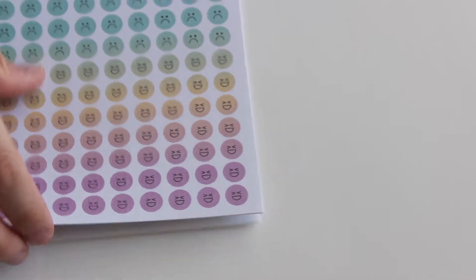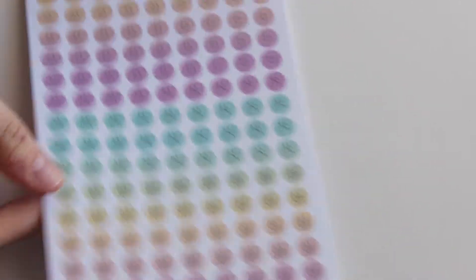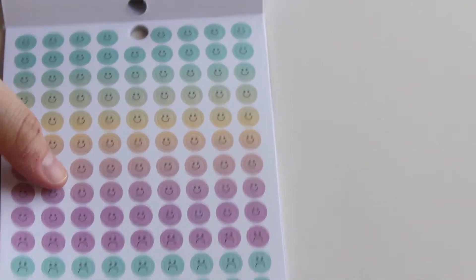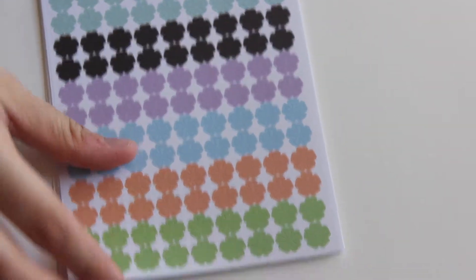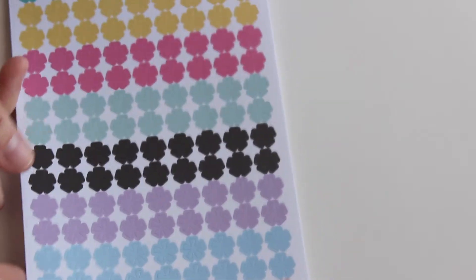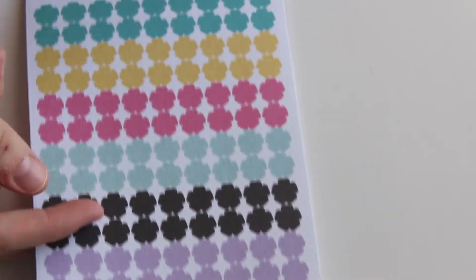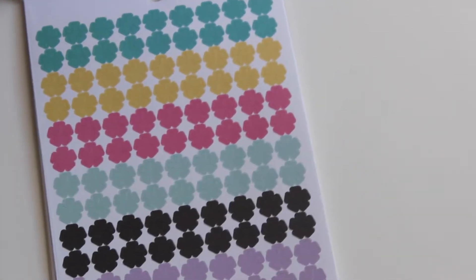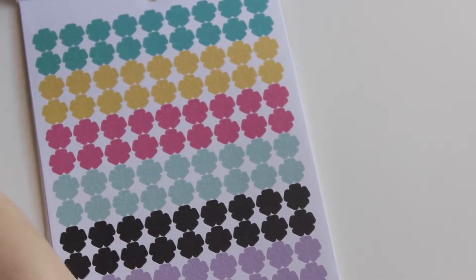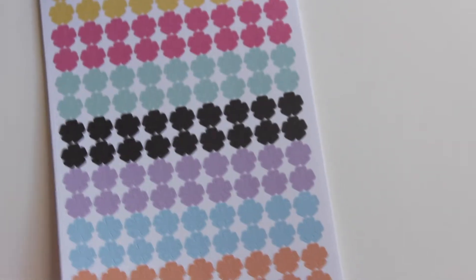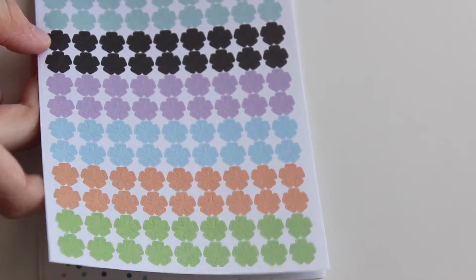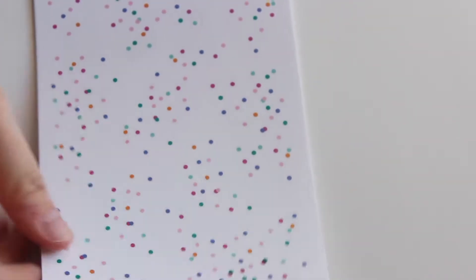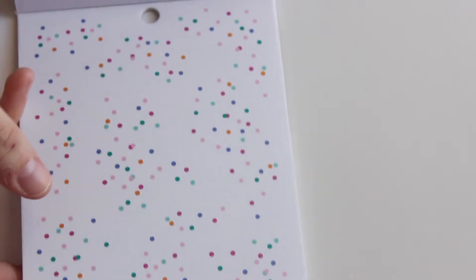And these are smiley faces and frowny faces. Asterisks in every color. I like the black. I wish that they made more sticker books with like black and white in them. I know there's like a little sticker pad, I have it, the black and white one. But I wish there was more like just black boxes, black asterisks. This looks like confetti and it's on the clear print.